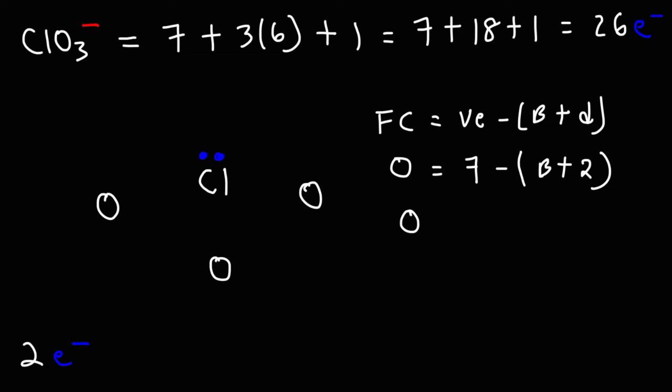Well, let's do some algebra. So this is going to be 0 equals 7 minus b minus 2. If we subtract 7 by 2, we're going to get 5. In order for 5 minus b to be equal to 0, b has to be equal to 5. So to get a formal charge of 0, we'll need 5 bonds around the central chlorine atom. So this is going to be 1, 2, 3, 4, 5.